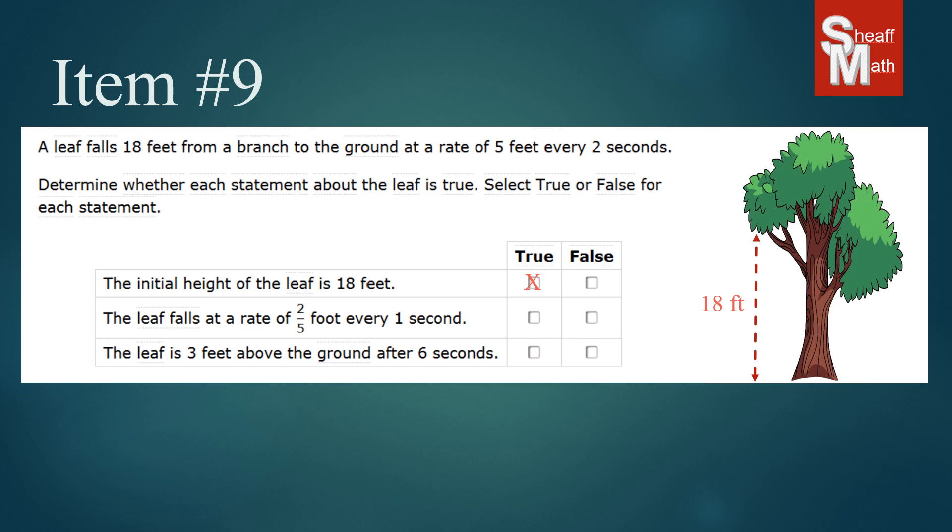Now our second statement says the leaf falls at a rate of two-fifths of a foot every one second. Now our rate up in the problem says five feet every two seconds. And so if it's five feet every two seconds if we were to convert that to one second we would divide both of those in half, divided by two. And so what five feet per two seconds means is two and a half feet every one second. And so two and a half feet is a lot bigger than two-fifths of a foot. And so these are completely different rates. So that is a false statement.